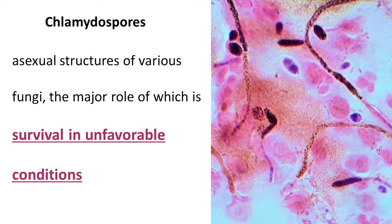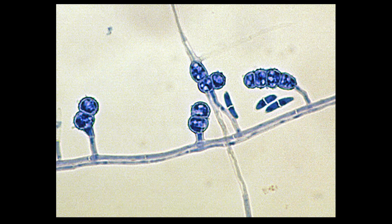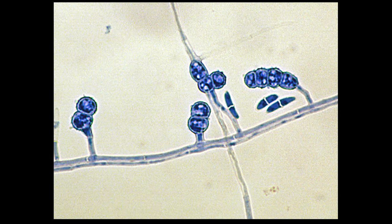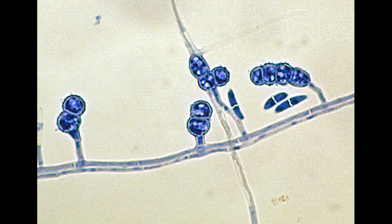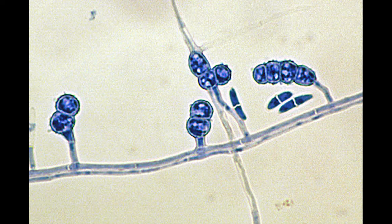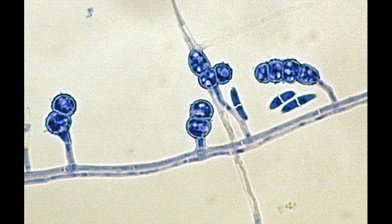Chlamydospores are asexual structures produced by certain fungi under unfavorable environmental conditions. Despite the fact that chlamydospore has 'spore' at the end of the word, traditionally associated with reproductive function, chlamydospores primarily serve as a vital survival mechanism. These specialized structures enable the fungi to endure and persist through challenging circumstances, ensuring long-term survival even when faced with adverse surroundings.